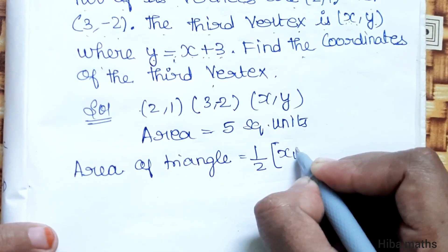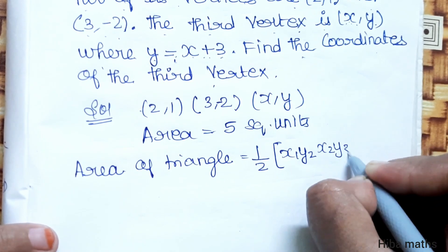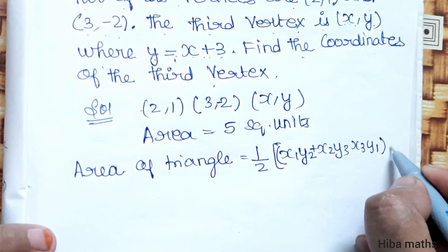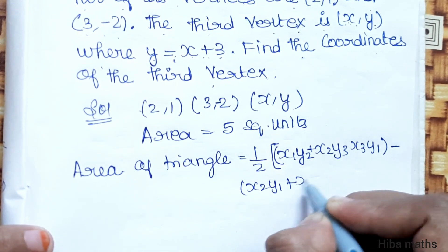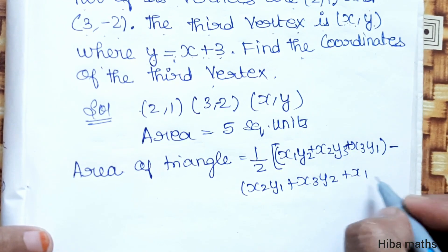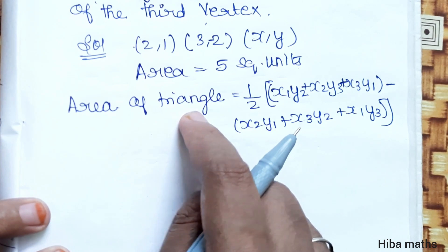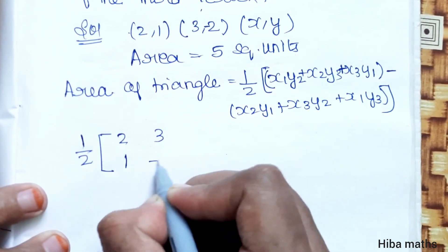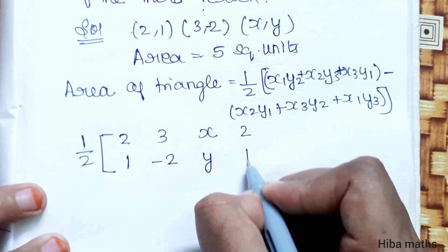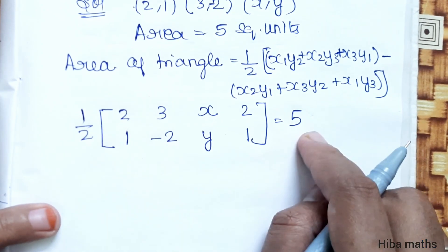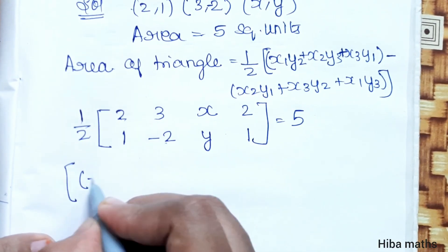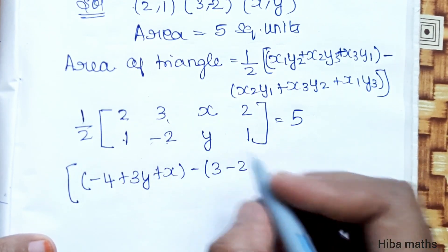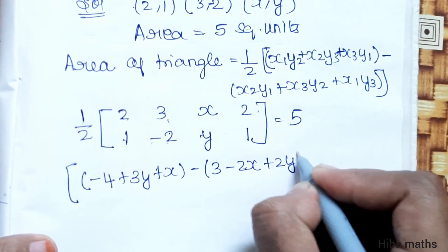The area formula is: 1/2 times [x1(y2 - y3) + x2(y3 - y1) + x3(y1 - y2)], which expands using coordinates x1, y1, x2, y2, x3, y3. Substituting: plus x minus 1 into 3, plus 2 into x, minus 2x plus y into 2, equals the given expression.